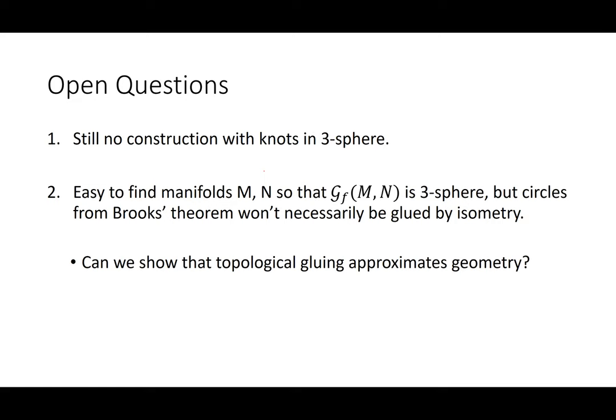Let me end with some open questions. There's still no construction with knots in the three-sphere, which would be fun to figure out. It's easy to find manifolds whose gluing gives a three-sphere, but the circles from Brooks' theorem aren't necessarily glued by an isometry. On the other hand, this is less rigid than talk two — we're just trying to approximate, not construct explicit links. Perhaps as we get more and more circles, even if the gluing isn't an isometry, the topology might be approximating the geometry well enough. But I'm not quite sure how to do that, so I'll leave that as open.